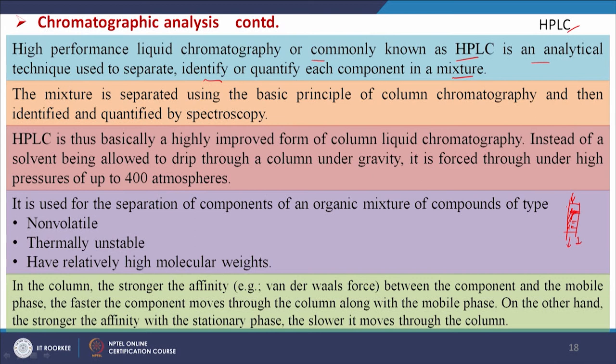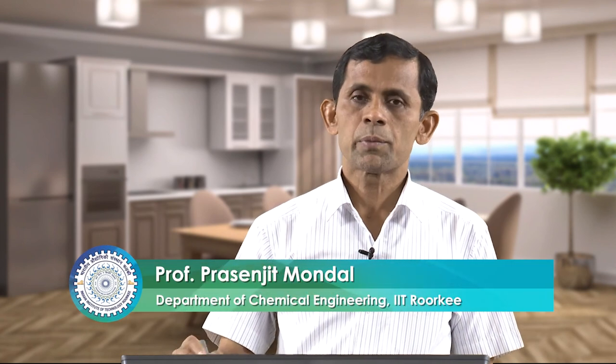In HPLC, the mobile phase is passed through the column at high pressure using a pump. This high pressure makes the separation more effective. The mixture is separated using the basic principles of column chromatography and then identified and quantified by spectroscopy. HPLC is basically a highly improved form of column liquid chromatography — instead of a solvent dripping through a column under gravity, it is forced through under high pressure of up to 400 atmospheres.